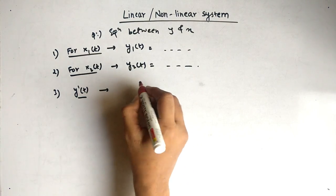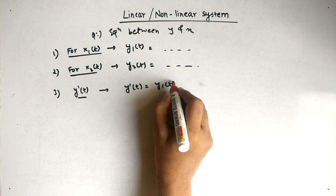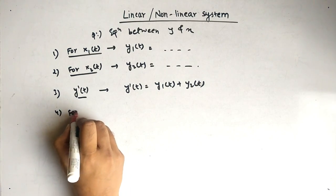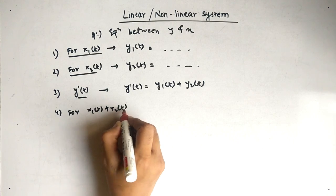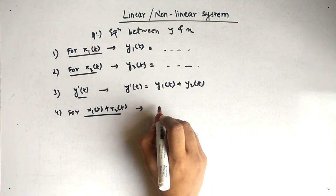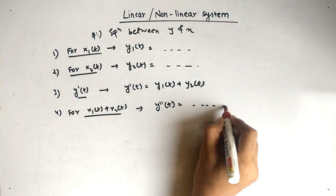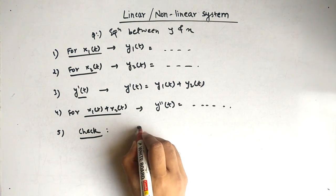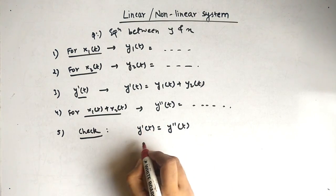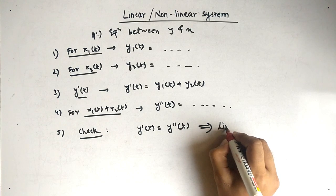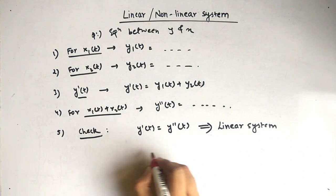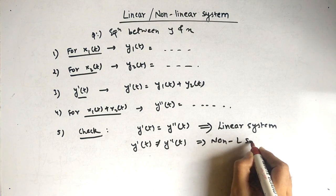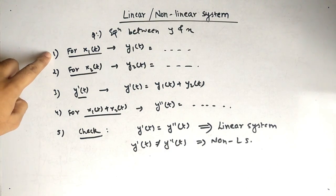y-dash of t is equal to y1 of t plus y2 of t. The fourth step: for x1 of t plus x2 of t as input, what is the output? The output is denoted as y-double-dash of t. The last step is to check whether y-dash of t equals y-double-dash of t. If equal, it is a linear system; if not equal, it is a nonlinear system.